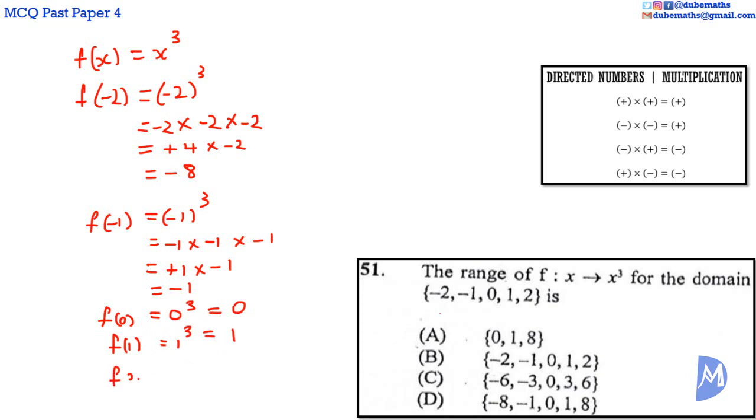And F of 2 equals 2 cubed. 2 multiplied by 2 is 4. 4 multiplied by 2 equals 8. The range is thus negative 8, negative 1, 0, 1, 8. The answer is D.